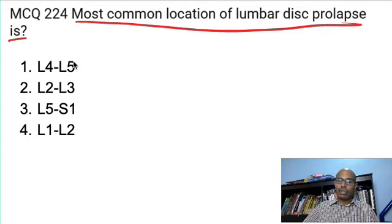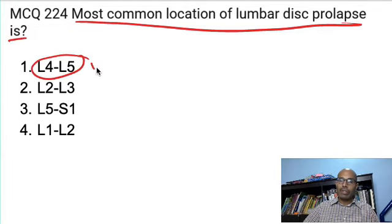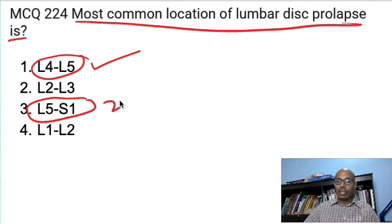So the most common location for lumbar disc prolapse is L4-L5. L4-L5 is the number one location where lumbar disc prolapse occurs and L5-S1 is the second most common location where the disc prolapse occurs.